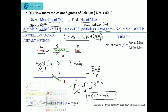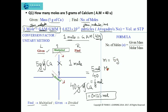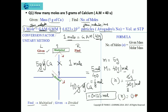Now the second method using the formula: number of moles (N) equals given mass divided by molar mass. The given mass is 5 grams and the molar mass of calcium is 40 grams per mole, meaning 1 mole of calcium weighs 40 grams. Substituting, N = 5/40 = 0.125 mole. Both methods give the same answer — it's up to you which one you want to use.